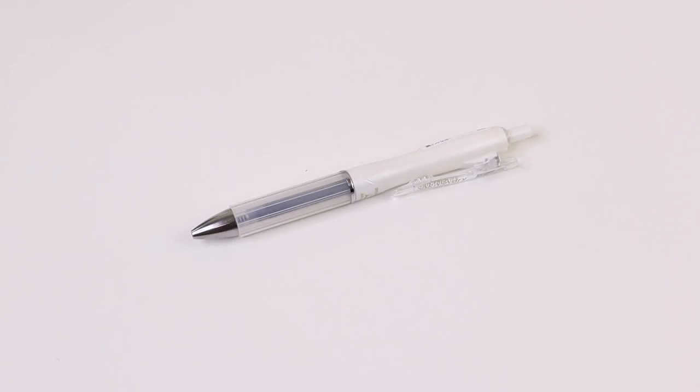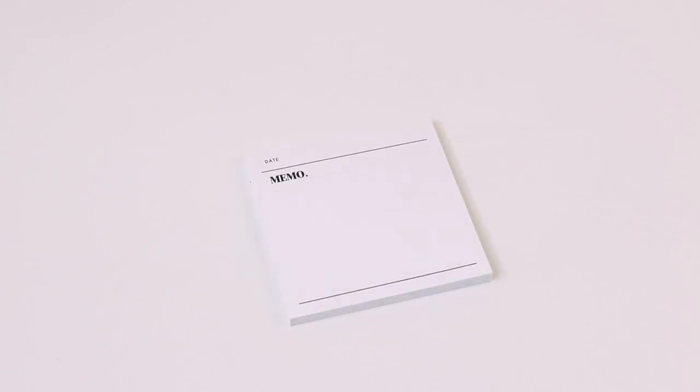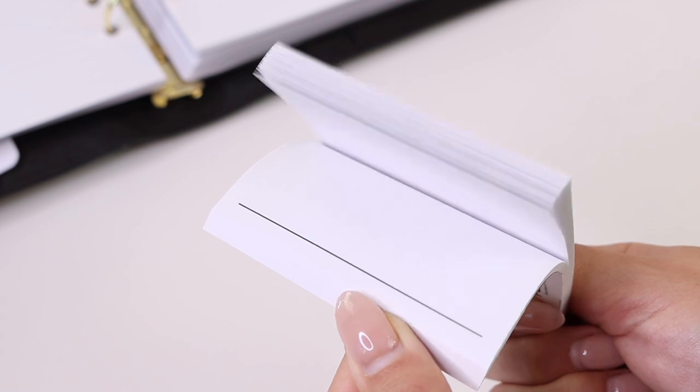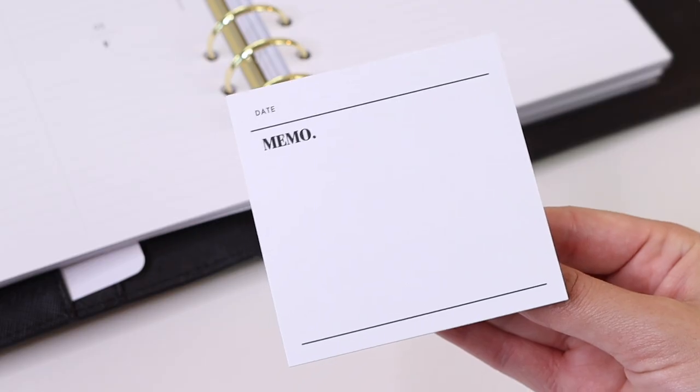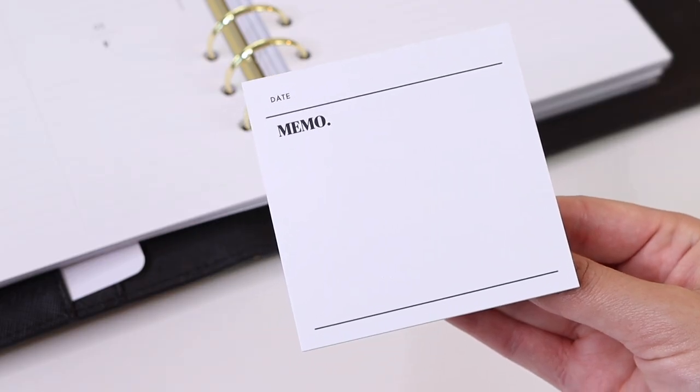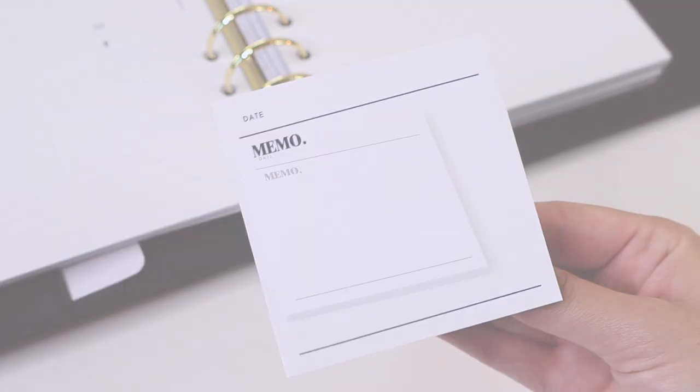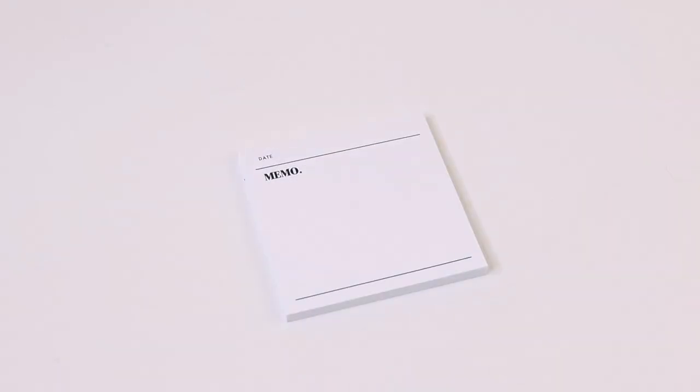Next, we have our dated memo sticky notes. They are white sticky notes with a line for the date up at the top, and these are great for day-specific tasks, for noting any dates that we need to revisit in the future, or if we have any ideas or things that we need to circle back or follow up on in the future.